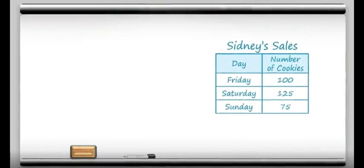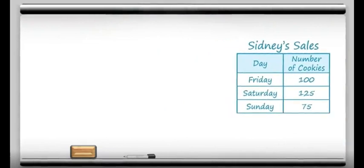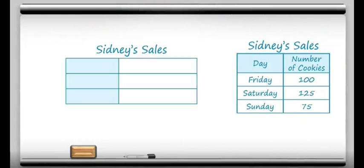Now we can take this mathy-looking table and turn it into a picture graph. Picture graphs can have a title just like our table, and it's going to look a little bit like our table. We're going to have the categories down the side, and then we're going to fill up the frequency — the number of cookies — with pictures instead of a number.